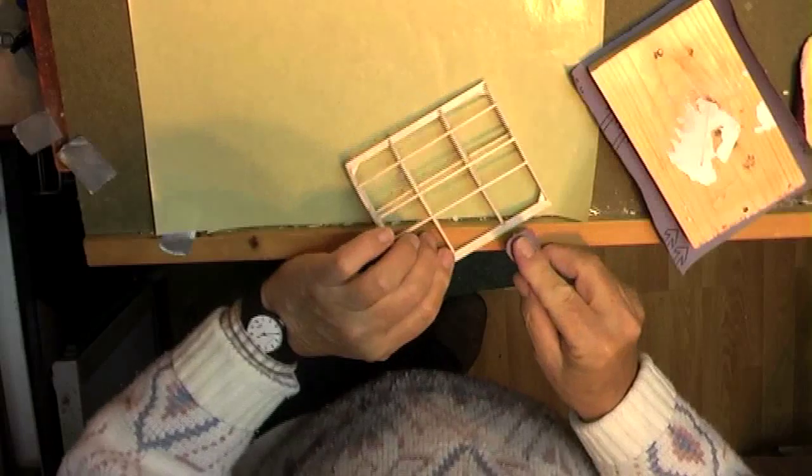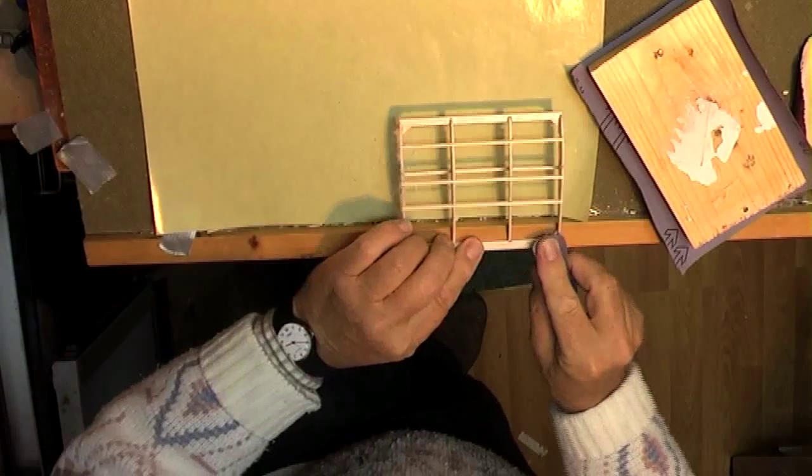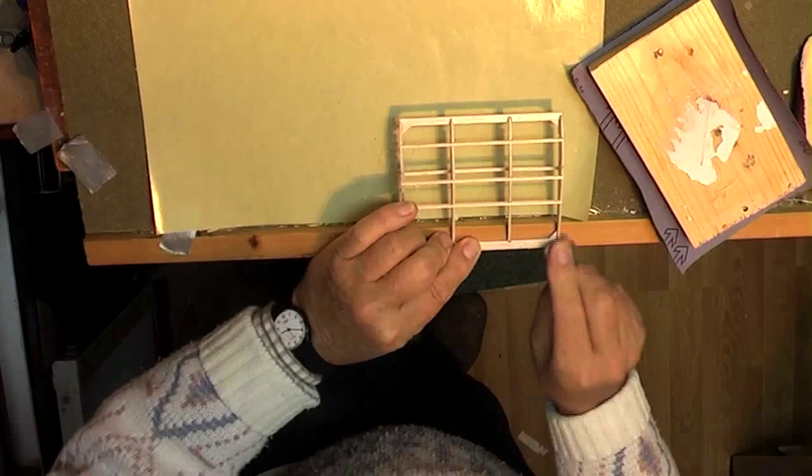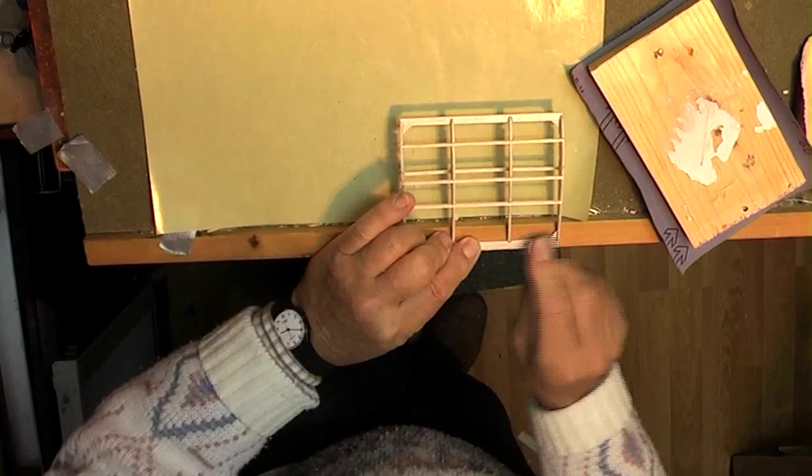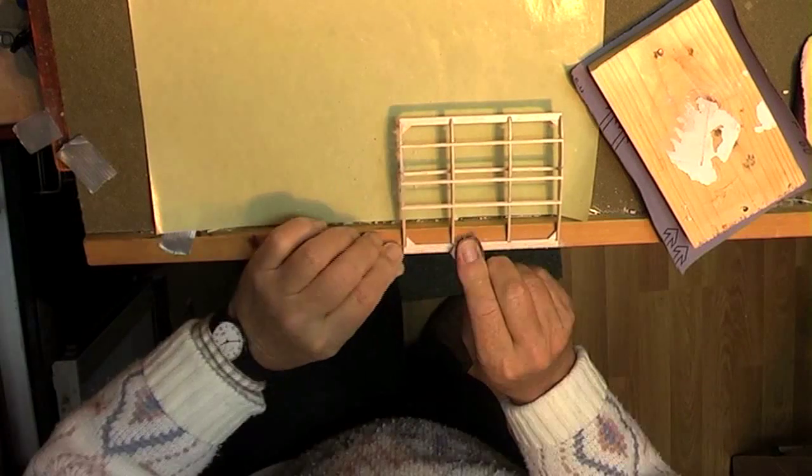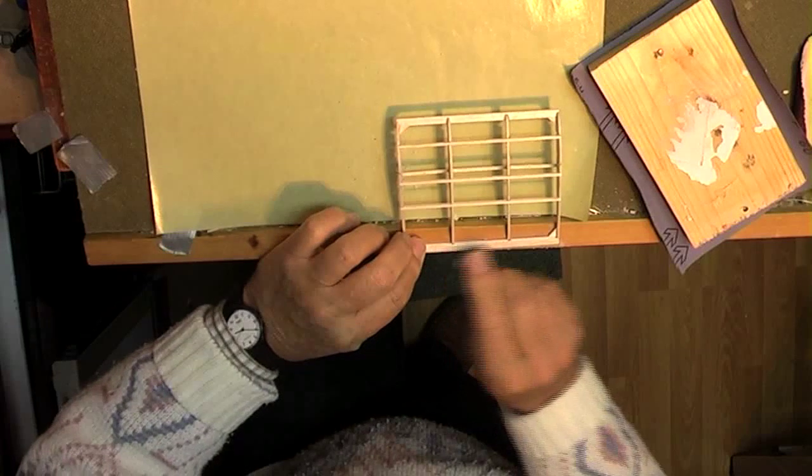In order to shape the trailing edge to a neat tapered edge, the bottom batten of my building board makes a useful sanding guide.